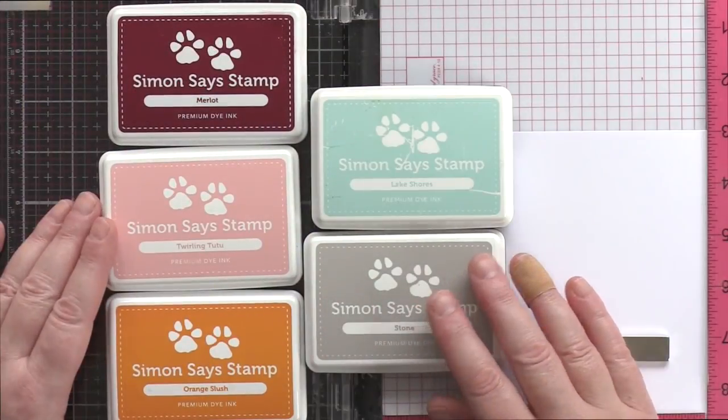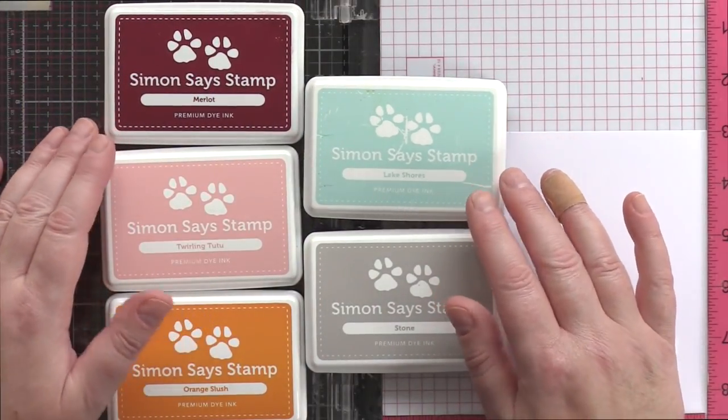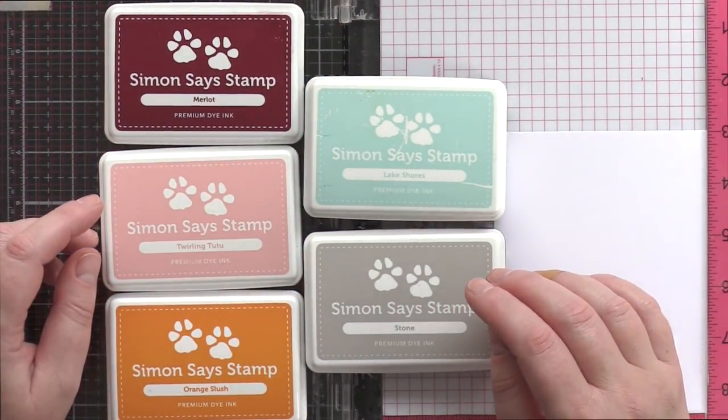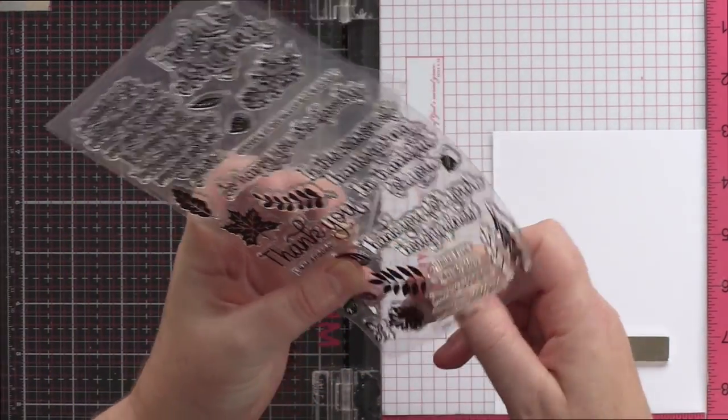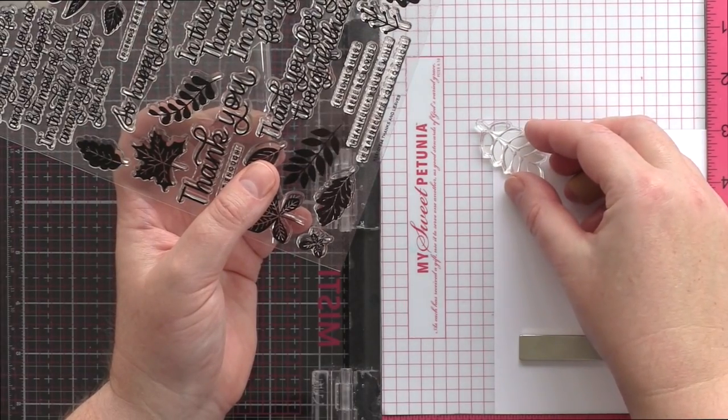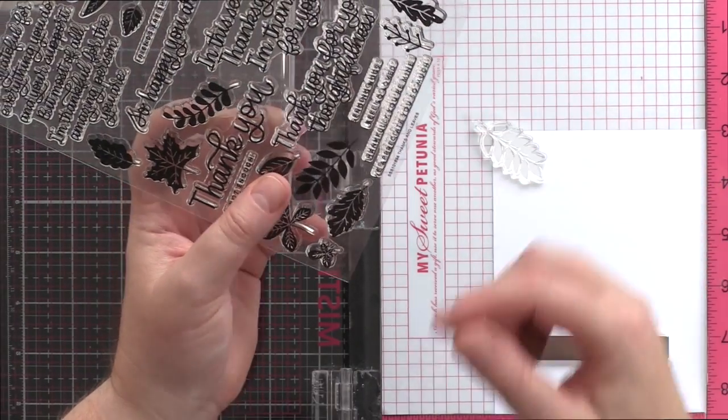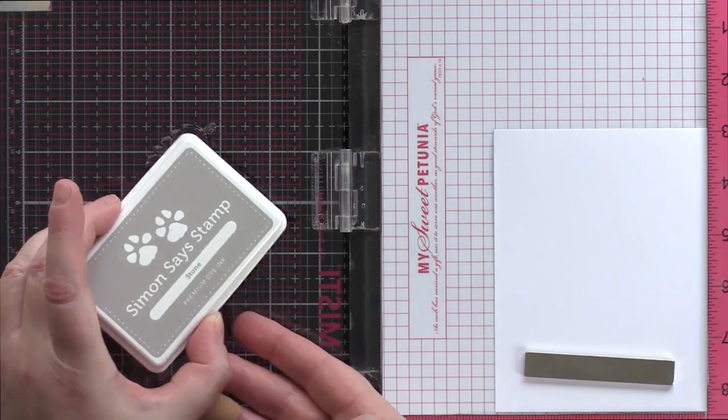When I first started thinking about this card, I spent some time on Pinterest searching out inspiring autumnal color schemes and the ones that caught my eye were the less traditional color palettes that included deep burgundy with pink and pale blue, and so I picked out several colors of Simon Says Stamp dye inks.